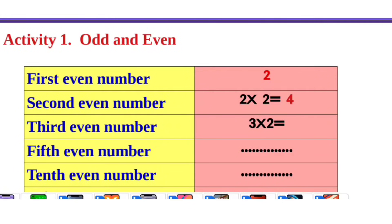Welcome to MindBlowing Kids! In the class of Maths Worksheets, we are going to study odd numbers and even numbers. We will start with even numbers — the first even number is 2, the second even number is 2 into 2, which equals 4.